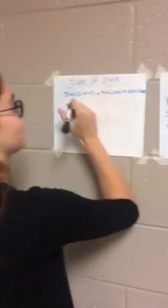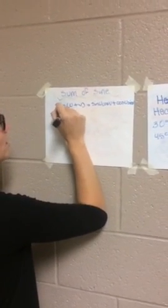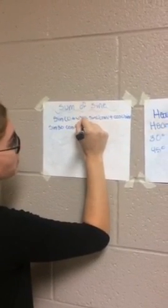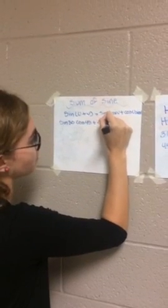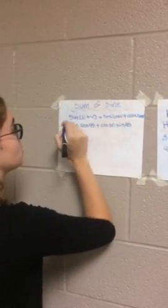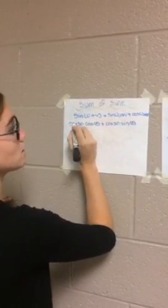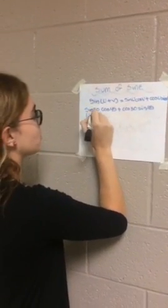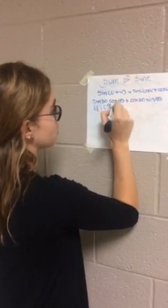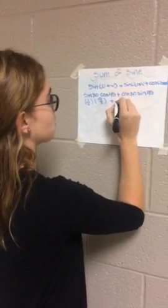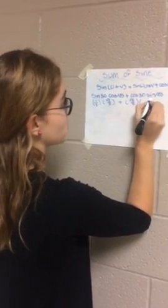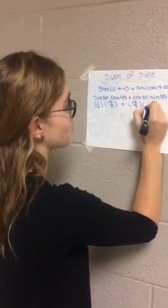Let's plug them in, partner. So sine of 30 cosine of 45 plus cosine of 30 sine of 45. So the y value of 30 is 1/2 times the x value of 45, which is root 2 over 2. Plus the x value of 30, which is root 3 over 2, times the y value of 45, which is 1/2.